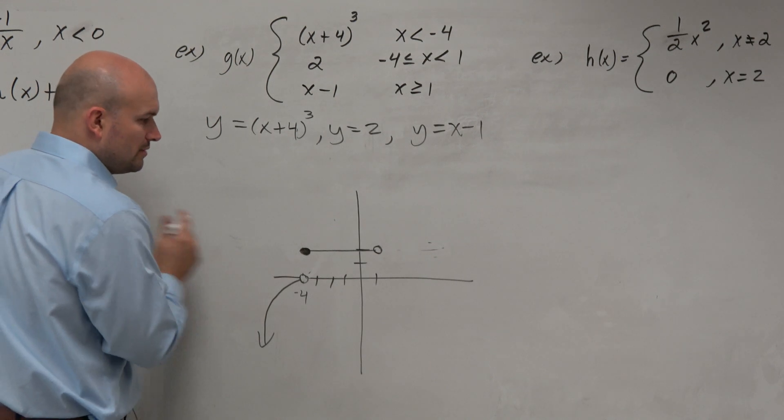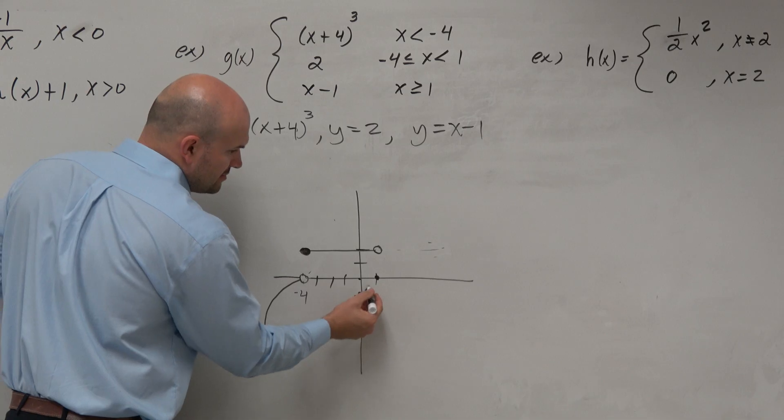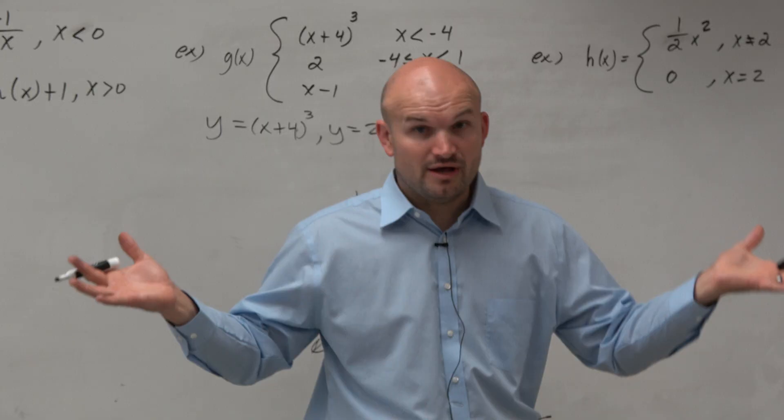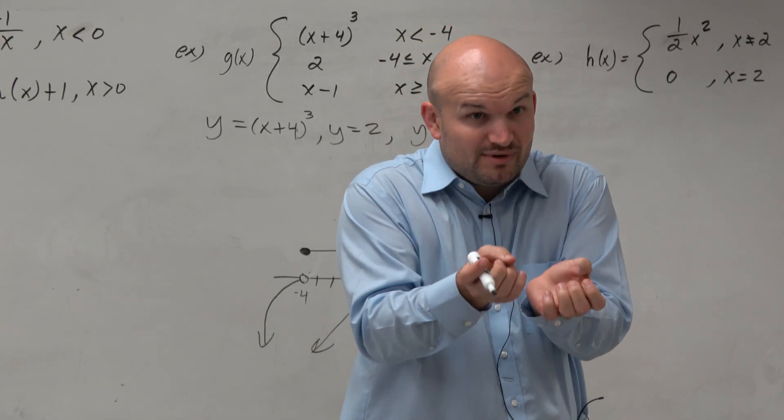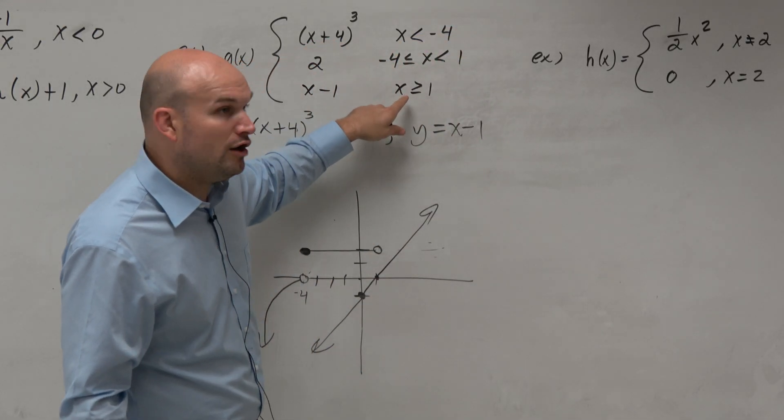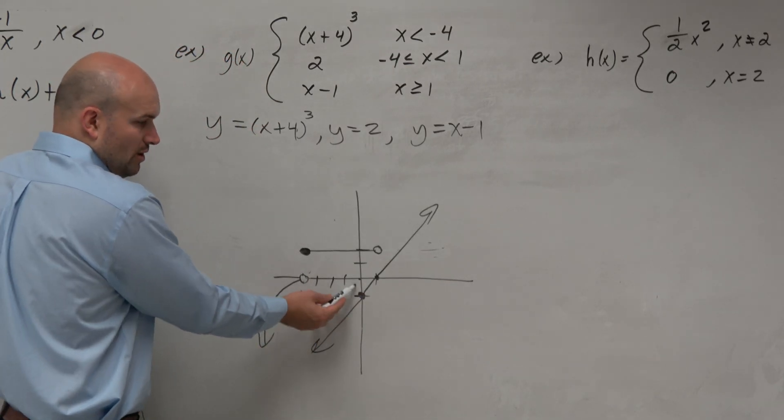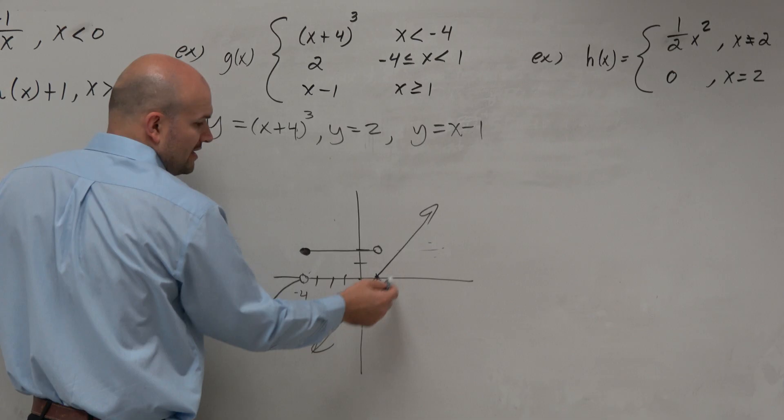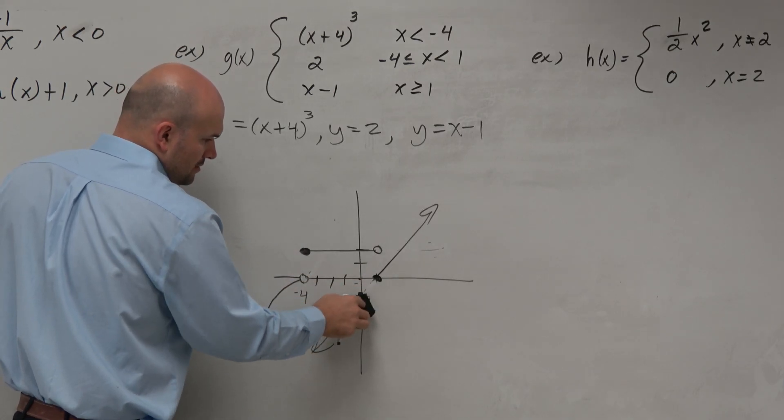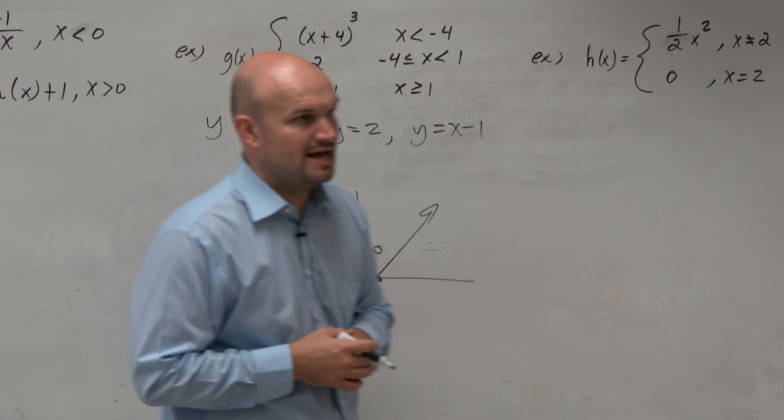Then the last one is y equals x minus 1. Well, that's just a linear. That's just a line. y-intercept at 1, up 1 over 1. It looks something like this. But is its domain for all real numbers? No. Just like our warm up, just like we did last class period, we're taking that line and we are restricting it. And it's being restricted for all values that are greater than or equal to 1. So we look at where is this equal to 1? Right there. So it's only for values greater than or equal to 1. That means anything to the left of 1, we are going to erase.